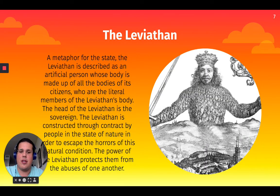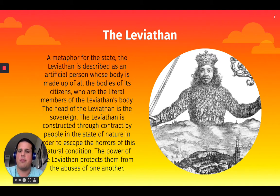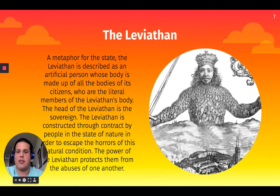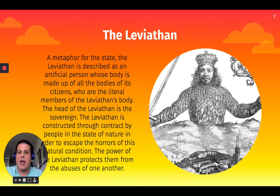The Leviathan, as we can see, this is a picture that Thomas Hobbes used. It's a metaphor for the state — described as an artificial person whose body is made up of all the bodies of the citizens, as we can see in this image. The head of the Leviathan is a sovereign, and the Leviathan is constructed through contract by people in the state of nature who need the power of the Leviathan to protect each other.